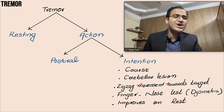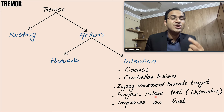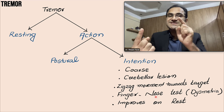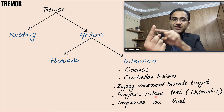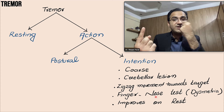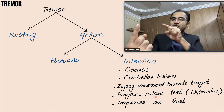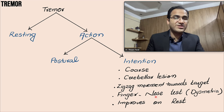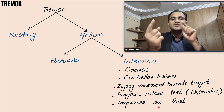Intention tremor improves on rest and worsens as the patient reaches out for an object. Another test you can perform is the finger-nose test. A normal person can easily touch their nose and then the examiner's finger. But in a patient with cerebellar tremor, as they get closer to the finger or nose, the tremor worsens — they overshoot, undershoot, and miss the target. The tremor worsens near the target because the cerebellum is damaged.